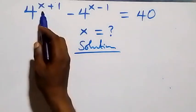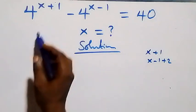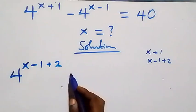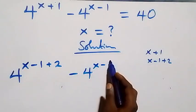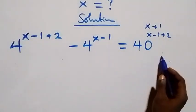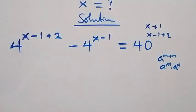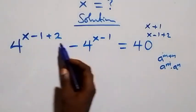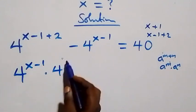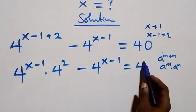And what we have here, x plus 1, we can rewrite that as x minus 1 plus 2. That is, this power here becomes 4 raised to power x minus 1 plus 2, then minus 4 raised to power x minus 1 equals 40 on this side. For this one we have e raised to power m plus n, which we can write as e raised to power m times e raised to power n. Here we treat m as x minus 1 and n as 2. Then what we have comes: 4 raised to power x minus 1 times 4 squared, then minus 4 raised to power x minus 1, equals 40.